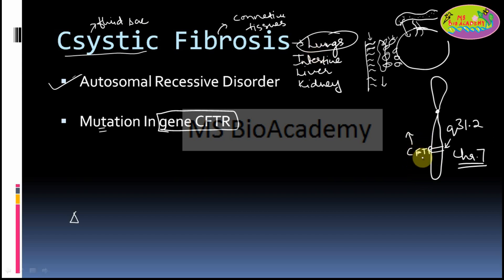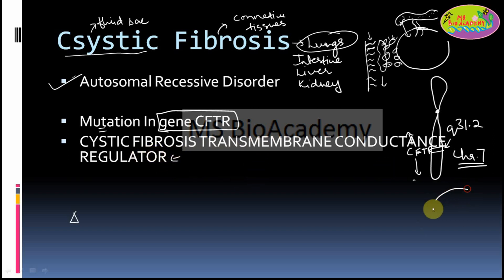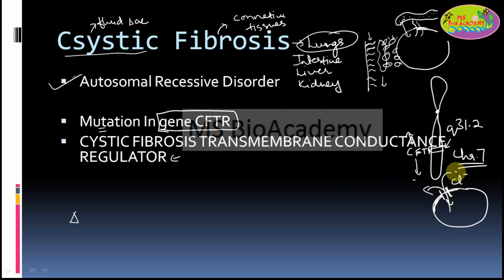Why does this mutation lead to cystic fibrosis? Because this gene is actually responsible for coding a protein known as the CFTR protein — the full form of which is Cystic Fibrosis Transmembrane Conductance Regulator. The role of this CFTR protein is that it is present as a transmembrane channel in our epithelial cells, embedded within the cell membrane, acting as a channel for the movement of chloride ions in and out of the cell.